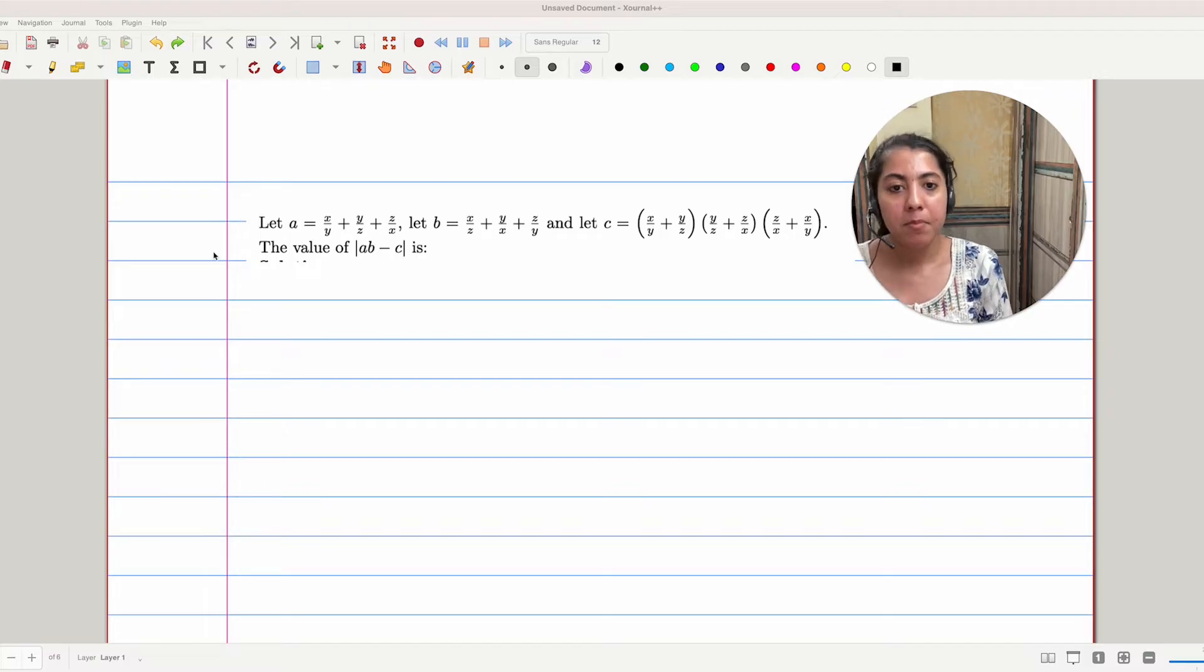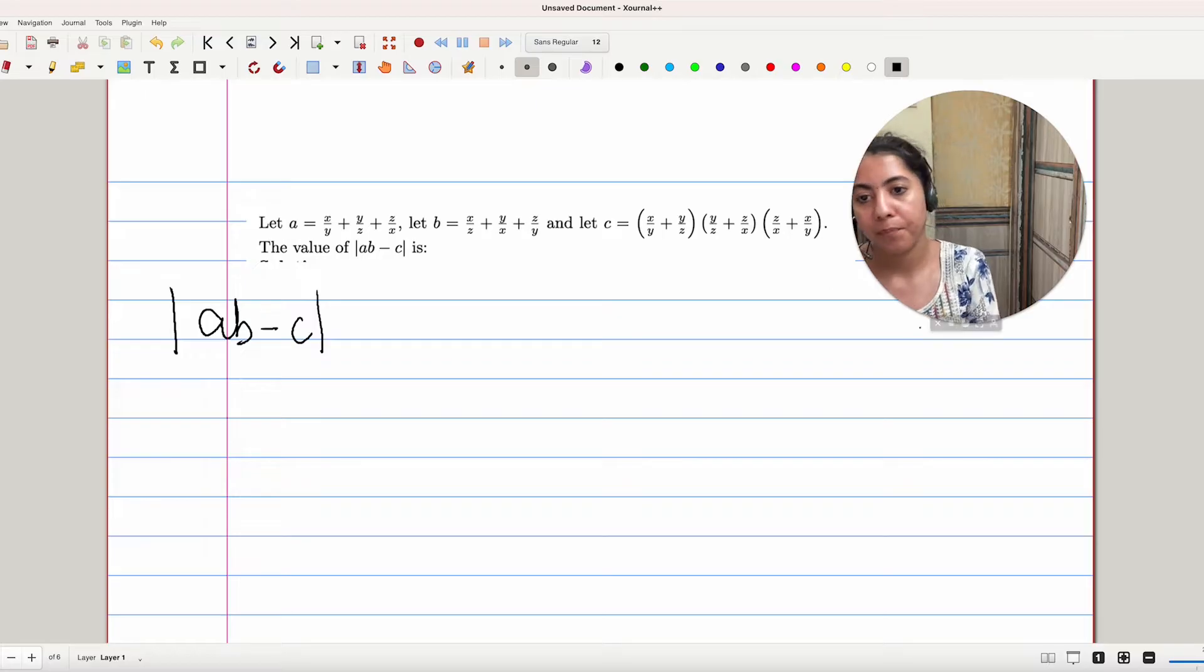Here we are given A, B, and C as sum of expressions in X, Y, and Z. We have to find the value of mod AB minus C. Let's find the value of A, B, and also C. So let's do that.